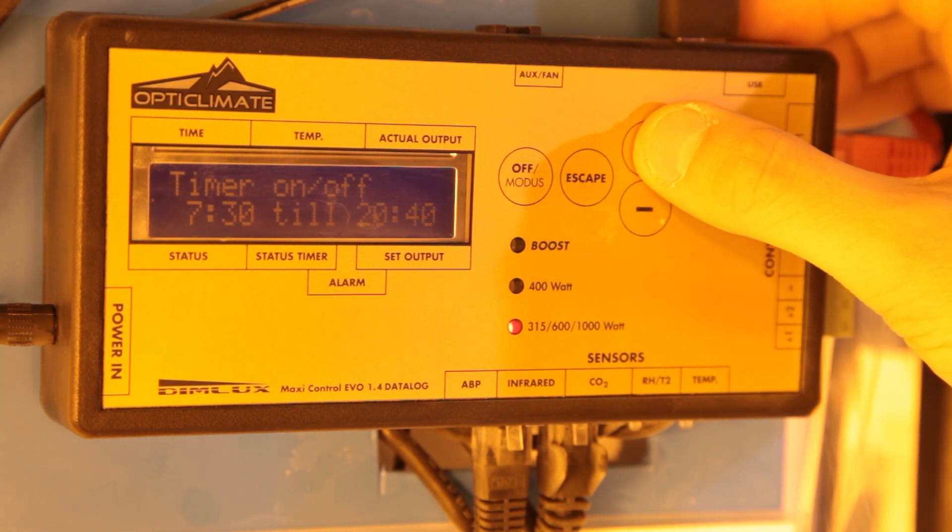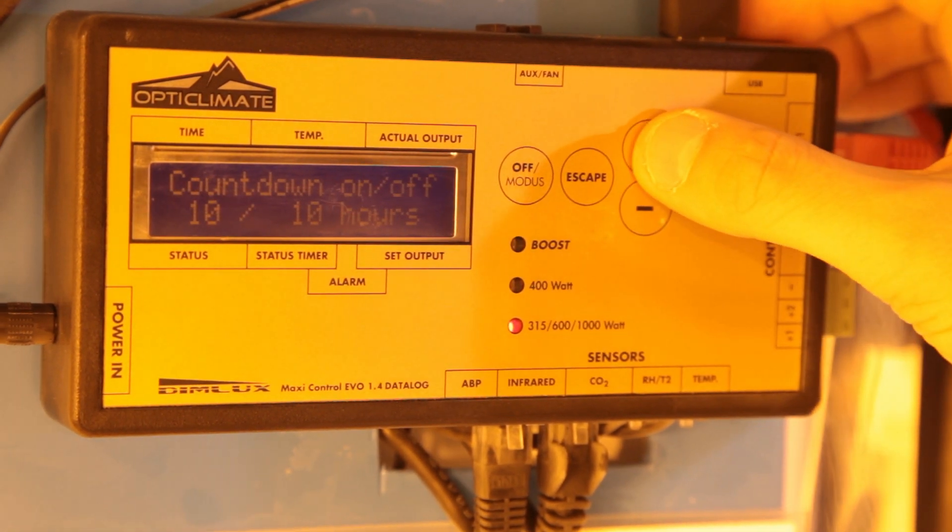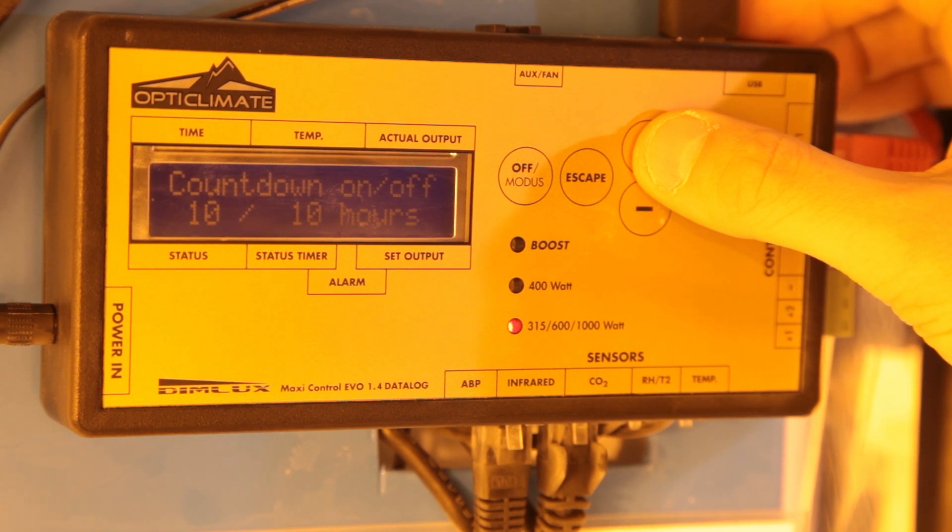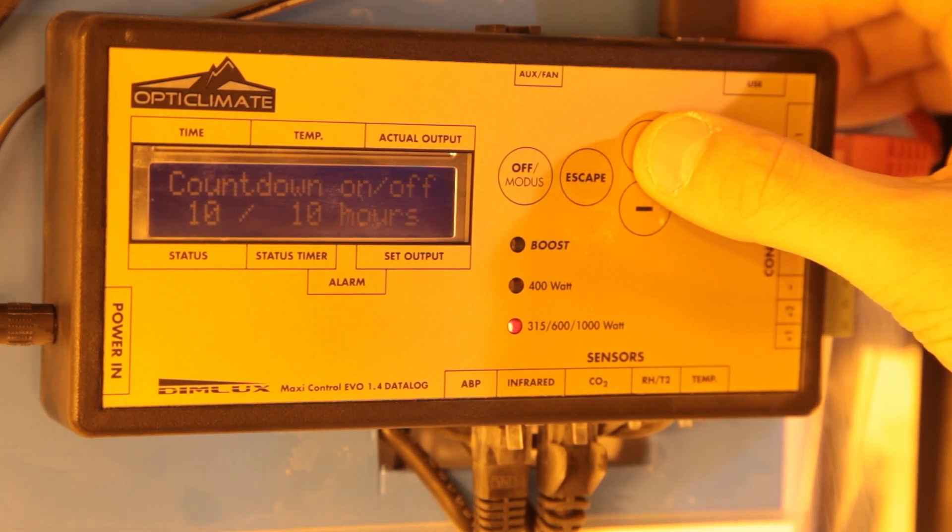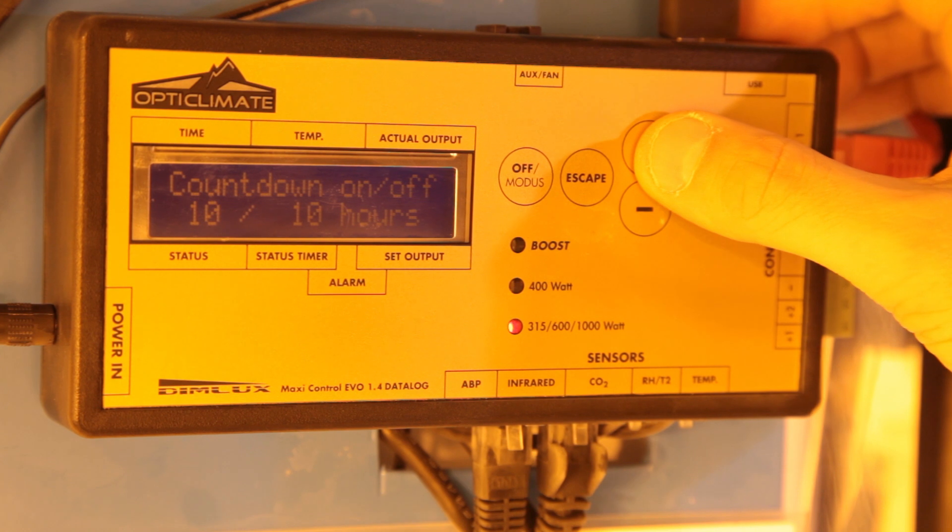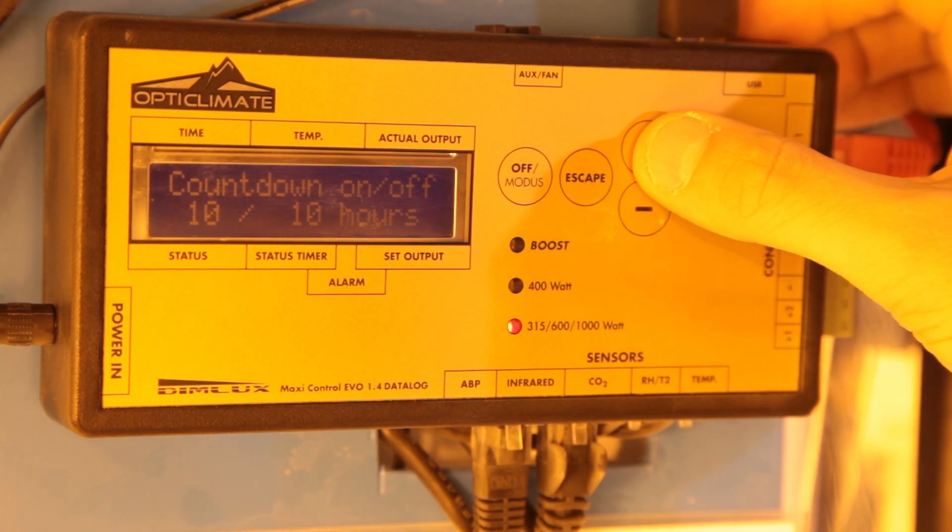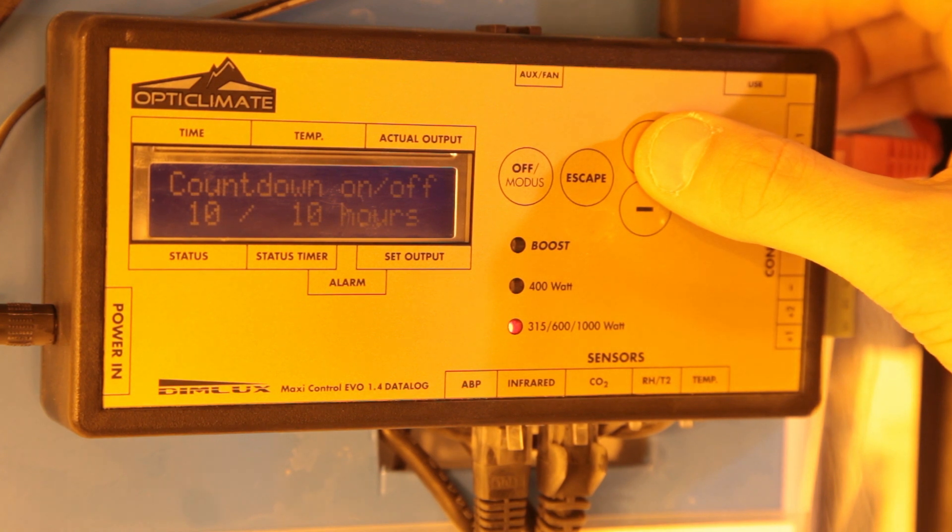Next we've got countdown on off. This is an interesting mode that will let you run lighting patterns like 10 hours on 10 hours off. It doesn't get used too often but it's useful if you've only got a limited amount of time to finish a crop. These settings aren't an option with regular timers because the on and off times actually change on a daily basis when you're running a 20 hour day. But with the maxi controller it's easy. Once you've set this use the mode button to choose lights controlled by countdown.